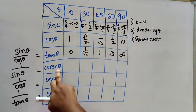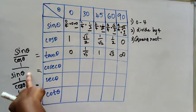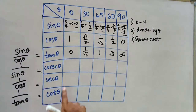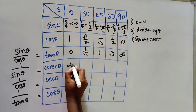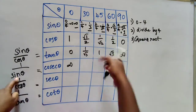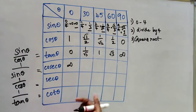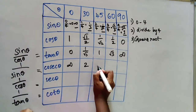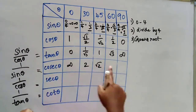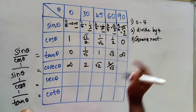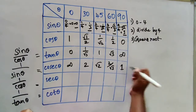Next, cosecant theta equals 1 by sin theta. Cosecant 0 = 1/0, which is again infinite. The remaining cosecant values are just the reverse of the sin values: cosecant 30 = 2, cosecant 45 = √2, cosecant 60 = 2/√3, and cosecant 90 = 1.